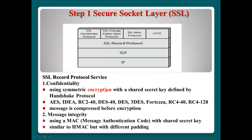Confidentiality uses a symmetric cipher system, encrypted by a shared secret key. Normally this secret key is defined by the handshake protocol. The handshake protocol uses cipher algorithms such as AES, IDEA, RC2, DES, 3DES, Blowfish, TESA, and RC4. These cipher algorithms all belong to symmetric cipher algorithms.